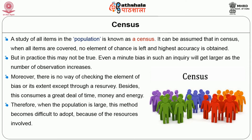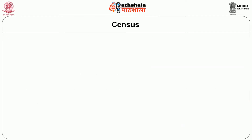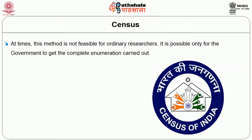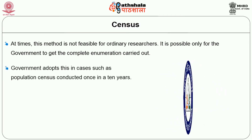Moreover, there is no way of checking the element of bias or its extent. Besides this, census consumes a great deal of time, money, and energy. Therefore, when the population is large, this method becomes difficult to adopt because of the resources involved. It is possible only for the government to get the complete enumeration carried out, as in population census conducted once in ten years.